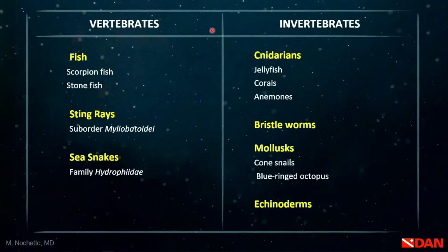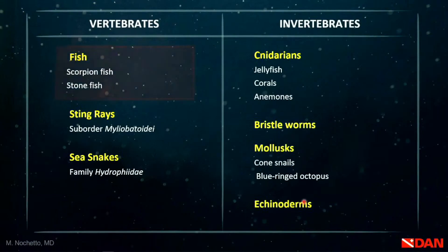Here is one way we can organize toxic marine life — as vertebrates and invertebrates. Among vertebrates, we'll talk about some fish; many can cause puncture wounds, but not all have a specific toxin. We'll also cover stingrays and sea snakes. Among invertebrates, we'll cover cnidarians — jellyfish, some corals, and hydroids — bristle worms, some molluscs, and echinoderms.